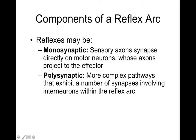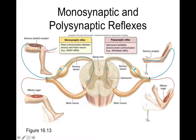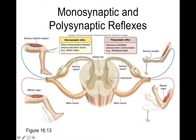Reflexes can be monosynaptic or polysynaptic. Monosynaptic means there's just one synapse — a sensory neuron synapses directly on a motor neuron, with no interneurons involved. The patellar tendon reflex is a classic example: tapping the tendon stretches the muscle, activating stretch receptors that send information to the spinal cord, where it synapses on a motor neuron causing the leg to kick out. The purpose of this stretch reflex is actually to protect the muscle from too much stretch.